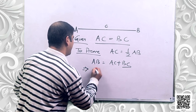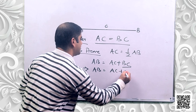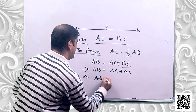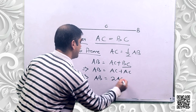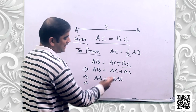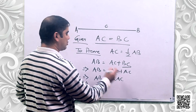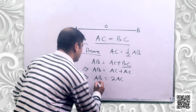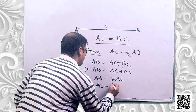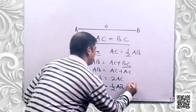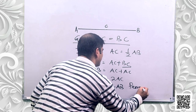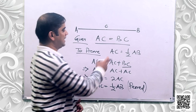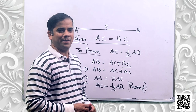So I will get AB is equal to AC plus AC, that means AB is equal to 2AC. If I take this 2 from the right-hand side to the left-hand side, it will divide AB by 2. So AC is equal to half AB. In this way, we have proved that AC is equal to half AB.